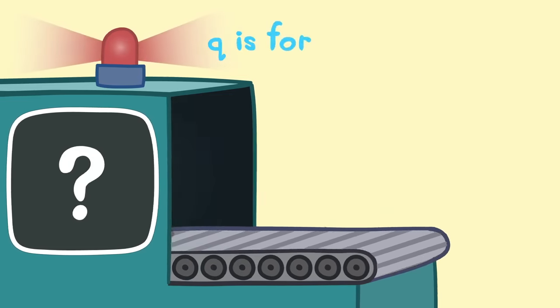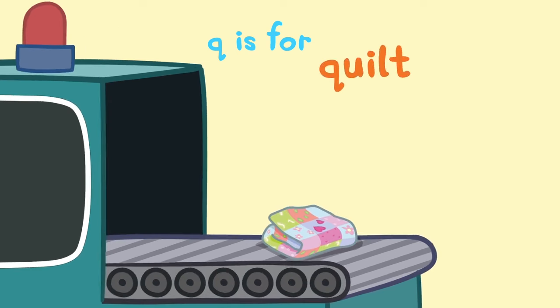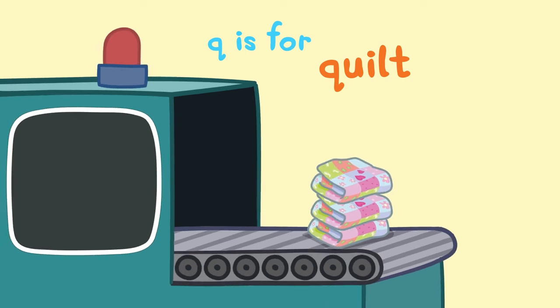Q is for... Correct! Q is for quilt. A quilt is sewn together from many pieces of fabric. Look at all the beautiful colours and patterns.